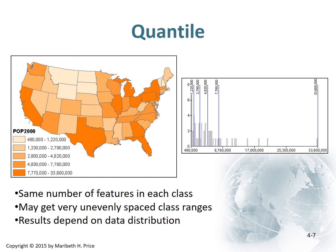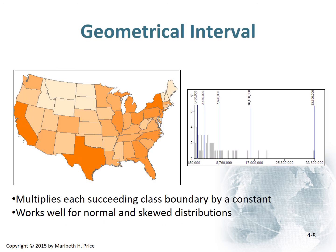For example, the first quantile might go from 0 to 5, the second from 5 to 10, the third from 10 all the way up to 80, the fourth from 80 to 90, and the fifth from 90 to 100. In terms of range it looks huge, but it still has the same number of points in that category as the others. So: same number of features in each class, but you can get unevenly spaced class ranges. The results depend on the data distribution. Geometric interval multiplies each succeeding class boundary by a constant, and it works well for normal and skewed distributions. It's essentially a mathematical calculation that evaluates and determines the class sizes.